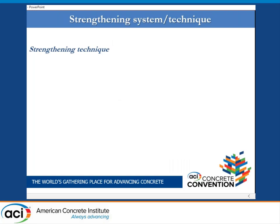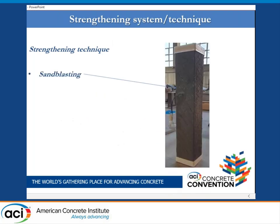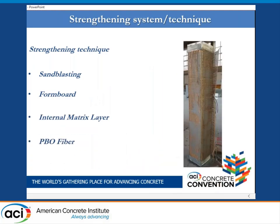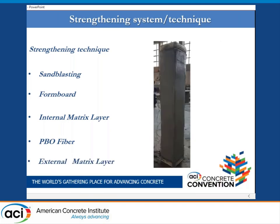The technique adopted to strengthen the columns is as follows: first, preparation of the external surface of the column; application of sampling boards to control the thickness; application of the base matrix layer; application of the PBO fiber layer; and then application of the external matrix layer. The thickness adopted for each matrix layer was 3 millimeters.